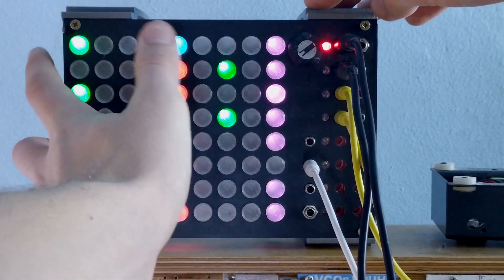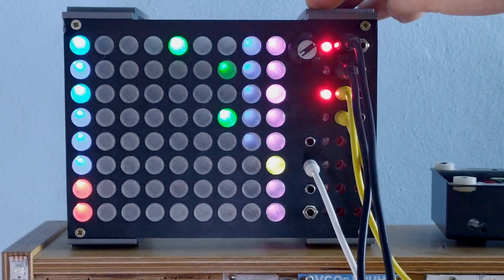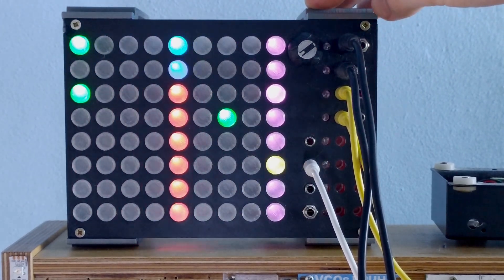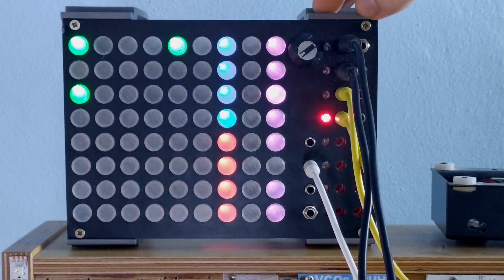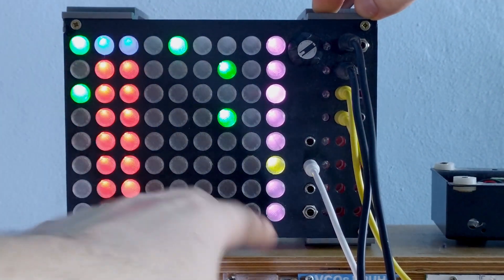So you press it to pause it, press it to start it. When the sequencer is paused, it resets and sends a high gate on the reset output. And when it gets resumed, it brings it back down. And it also has a reset input.